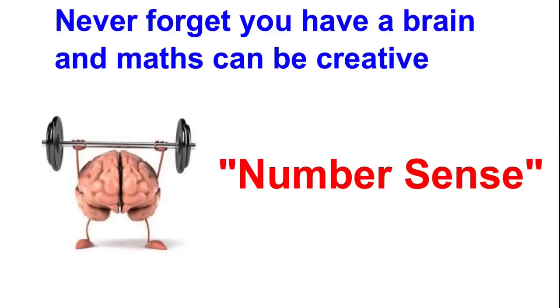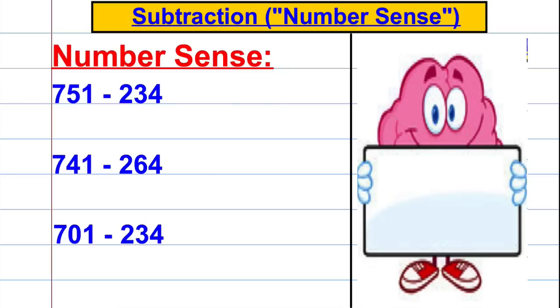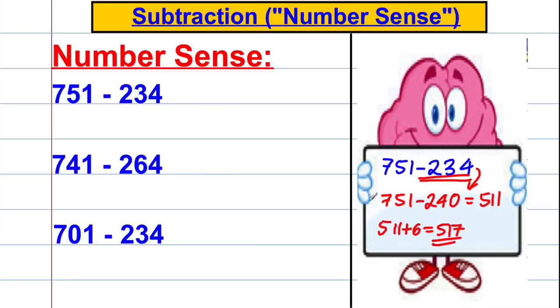Now, just one last thing. Never forget you have a brain and in maths you can be creative. It's something I learned on the Jo Boaler course about number sense. A lot of these problems you don't have to write down with written methods. You can actually work them out in your head if you use your brain. So 751 subtract 234. What I might have done is I might have instead in my head converted what I'm subtracting into a nice round number. I might have said let's do 751 subtract 240. Taking off 240 is quite easy because 51 subtract 40 is 11. And so I therefore have 511. But I've taken off 6 too much. So I have to add 6 back at the end. So that's how I may have done that question.